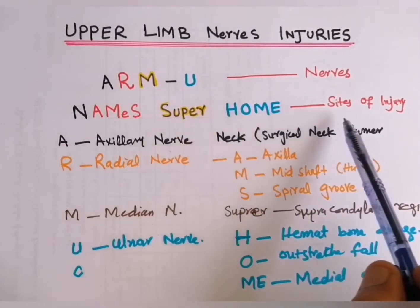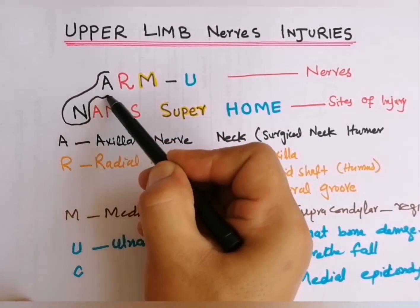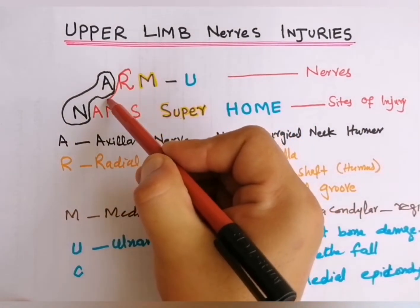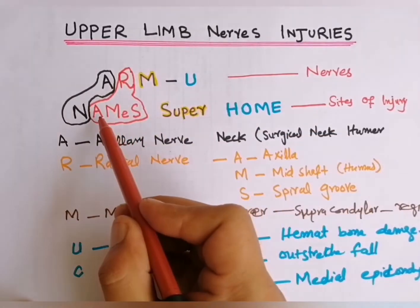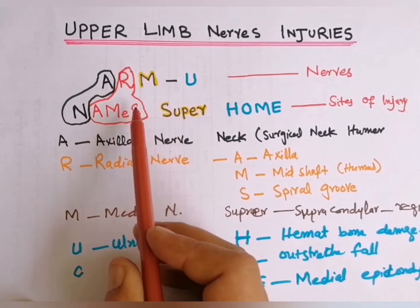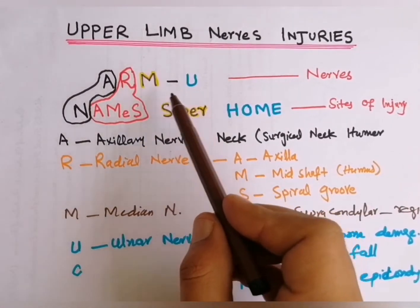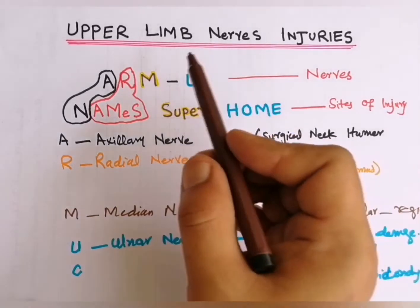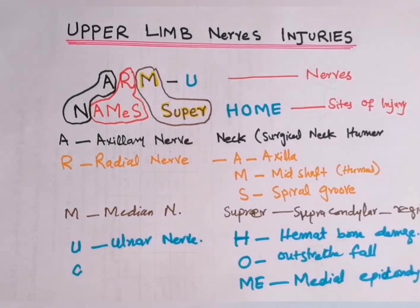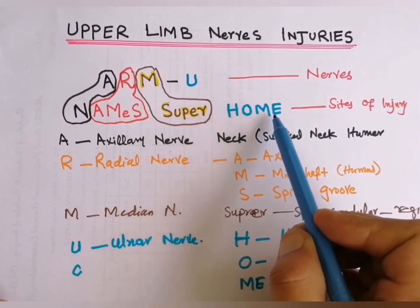So, RMU is for the nerves while NAMS SUPER HOME are the sites where these nerves are damaged. A in RMU is axillary nerve at neck of the humerus; R is radial nerve, damaged in NAMS — A for axilla inferior dislocation, M for mid-shaft, S for spiral groove; M in RMU is median nerve, damaged at supracondylar region of the elbow or humerus; and U is ulnar nerve, damaged at hamate bone, outstretched fall, and medial epicondyle.